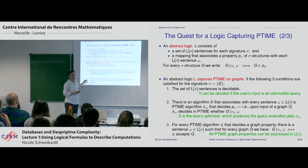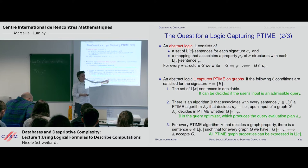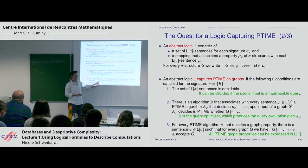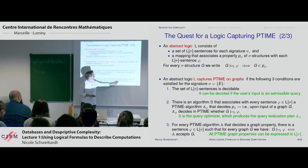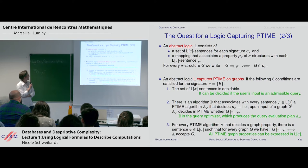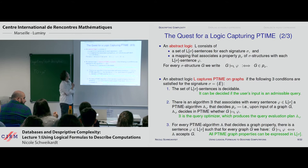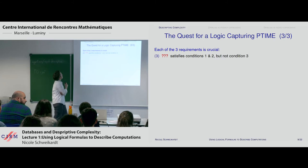These are the three requirements: first, syntax is decidable; second, you have something like a query optimizer; third, you can describe every P-time computable graph property. Each of these three requirements is crucial. I want to give examples where each requirement is missing and we get something useless.